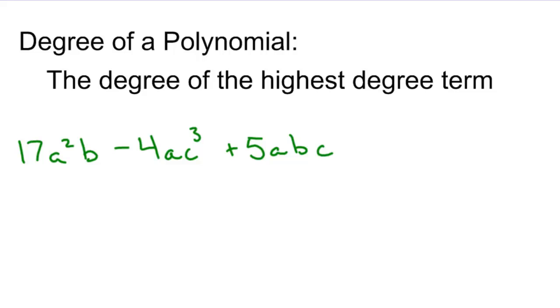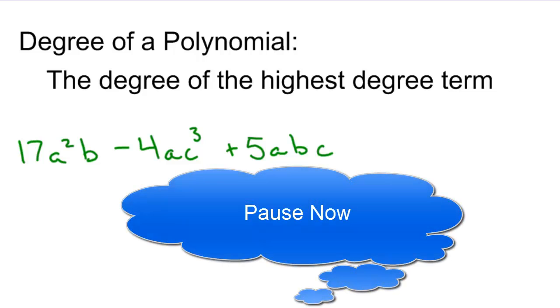So, 17a²b - 4ac³ + 5abc is a polynomial. It's a trinomial because it has three terms. Why don't you see if you can find the degree of this polynomial now?